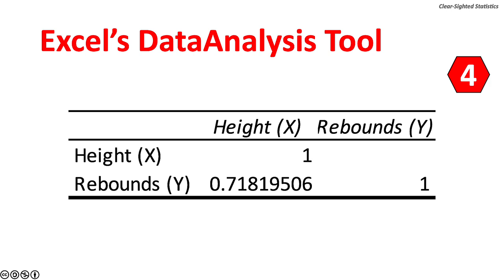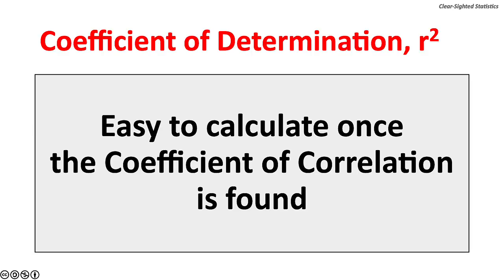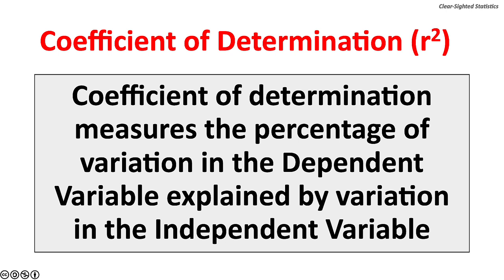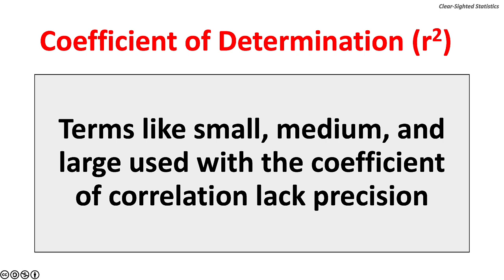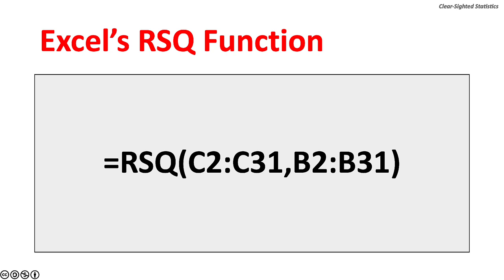The coefficient of determination, or R-squared, indicates how much of the variation in the dependent variable is explained by the independent variable. It is very easy to calculate once the coefficient of correlation is found. R-squared equals 0.5158, or 51.58 percent. The coefficient of determination measures the percent of variation in the dependent variable explained by variation in the independent variable. Terms like small, medium, and large used with the coefficient of correlation lack precision — R-squared is a more precise measure of effect size. Excel's RSQ function calculates R-squared.